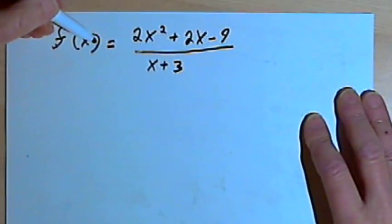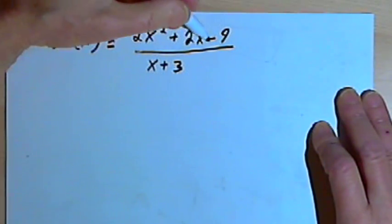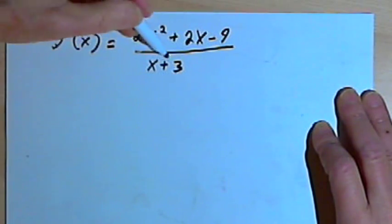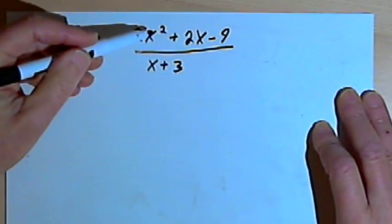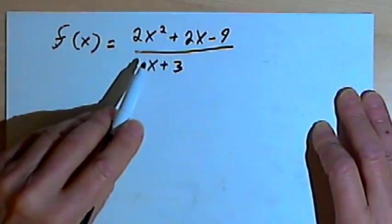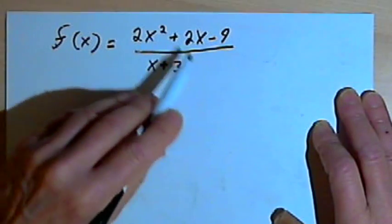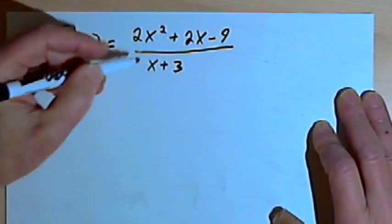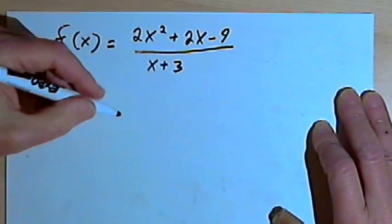Here I've got f equals 2x squared plus 2x minus 9 over x plus 3, so this will give me a slant asymptote. I can do these problems with either synthetic division or long division, and this one would be pretty easy with synthetic division.